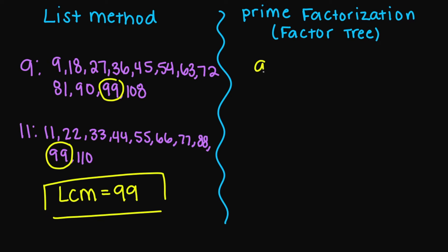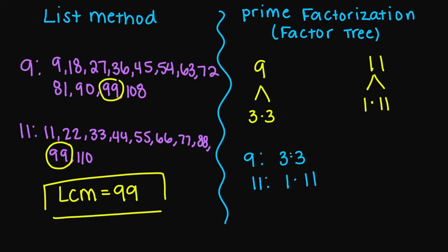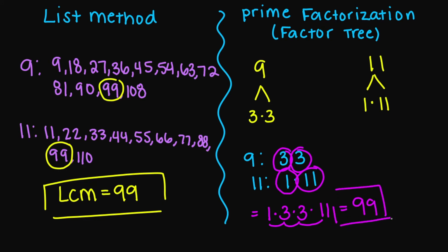Let's say if we did a factor tree. So for your nine, you have three times three. Eleven, you only have one times 11. So listing these out: nine is three times three. Since I don't have anything to match up, I'm going to include all of these numbers in my final answer. So we have one times three times three times 11. One times three is three, three times three is nine, nine times 11 is 99. So if you do the prime factorization way, your answer is 99.